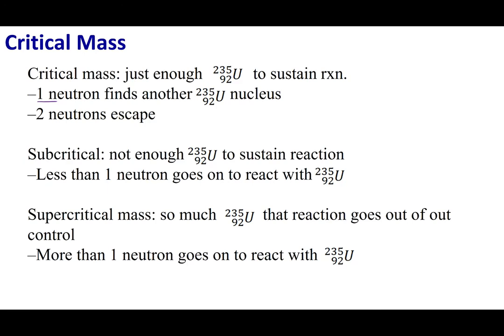In a nuclear reaction, a supercritical mass is what you want if you're making a nuclear bomb — releasing a tremendous amount of energy very fast. With a critical mass, this is what you want in a nuclear reactor or power plant: a continuous reaction that keeps producing energy.